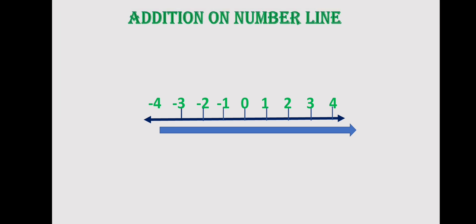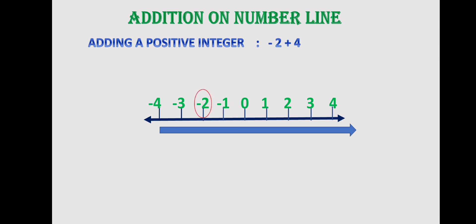Let's take the example: negative two plus four. We start at negative two and move four places to the right. We reach positive two, so the sum is positive two.